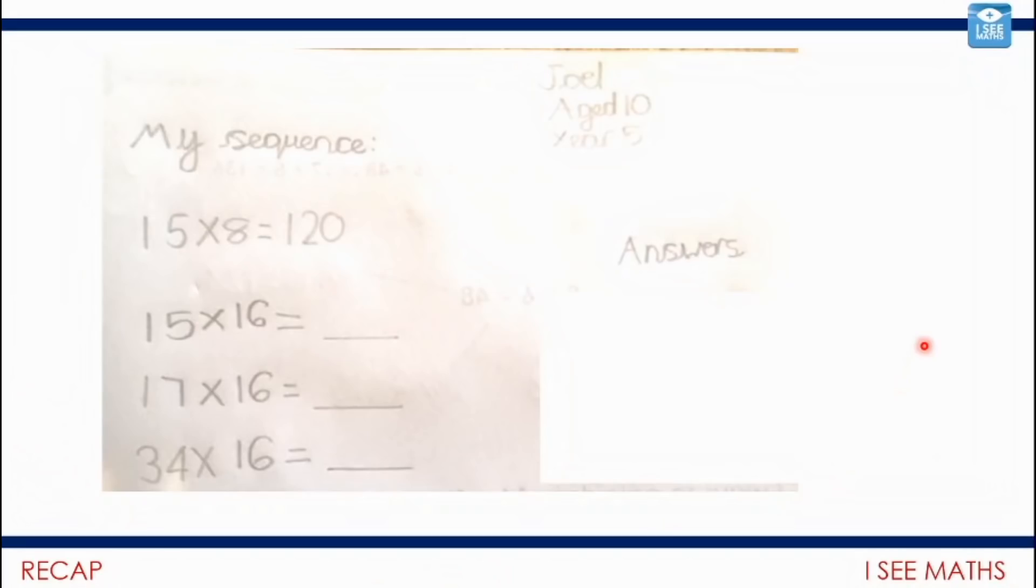We start today with Joel's challenge. Joel, thank you so much for sending this through. It was brilliantly designed. 15 multiplied by 8 equals 120. And then we have a sequence of questions that are linked to one another. When you're answering them, have a think about how does the question above help you to answer the question that you're on? Pause the video and have a go.